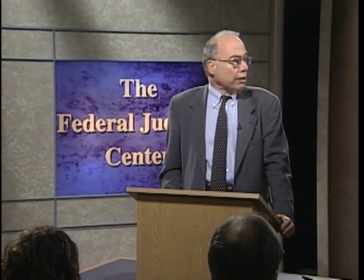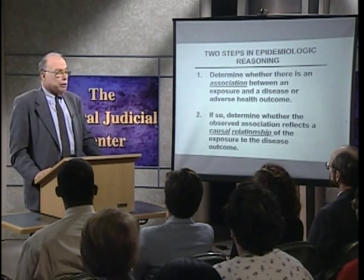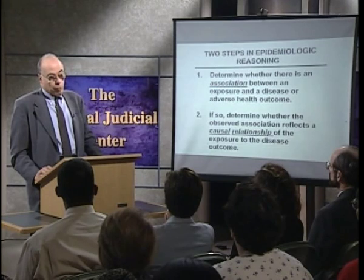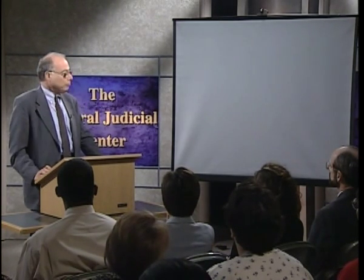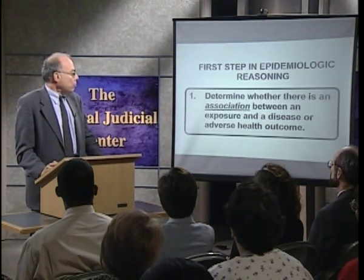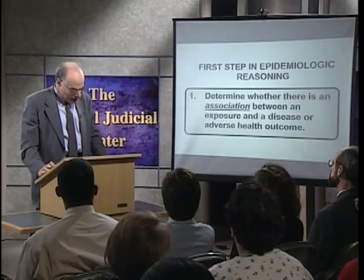How do epidemiologists go about their work? We basically have a two-step process as seen here. First, we try to determine whether there is an association between an exposure and a disease or adverse health outcome. If we demonstrate that there is an association, we then try to determine whether the observed association reflects a causal relationship between the exposure and the health outcome.